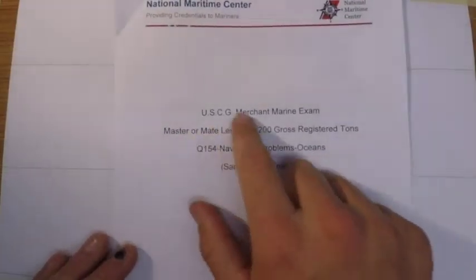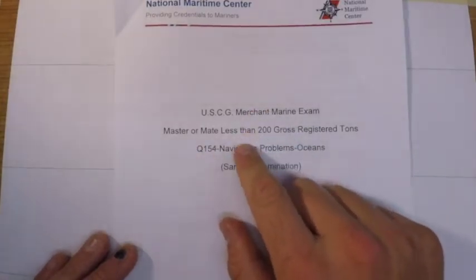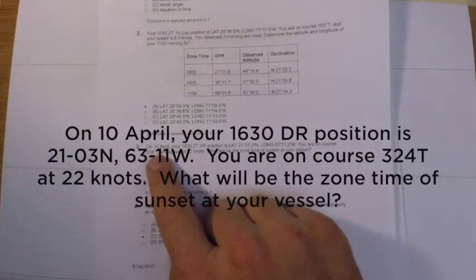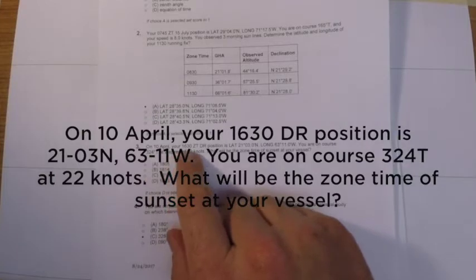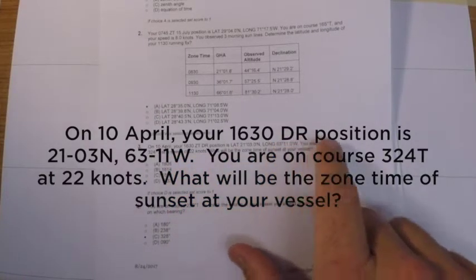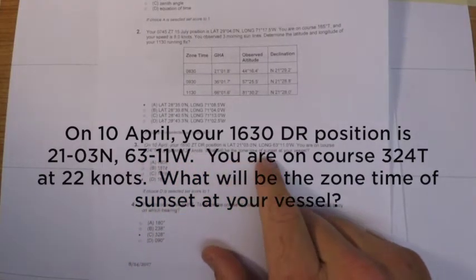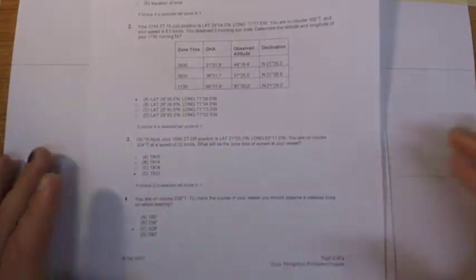Okay, welcome back to the sample exam from the National Maritime Center for 200-ton oceans problems. In this video we're going to work on problem number three. The problem reads: on 10 April 1981, your 1630 zone time DR position is latitude and longitude, you're on a course of 324 at a speed of 22 knots. What will be the zone time of sunset at your vessel?